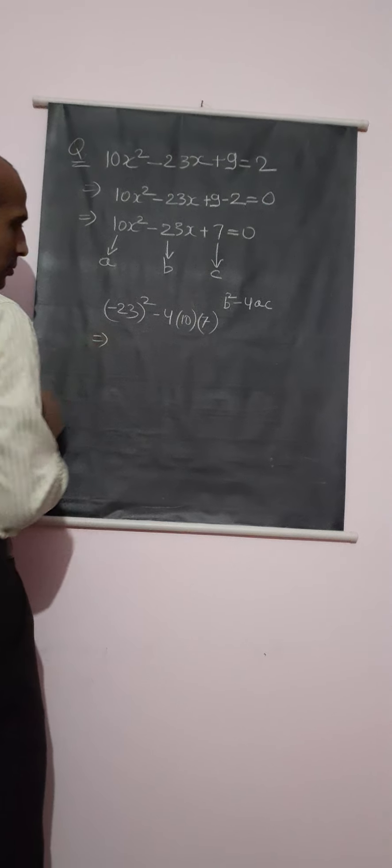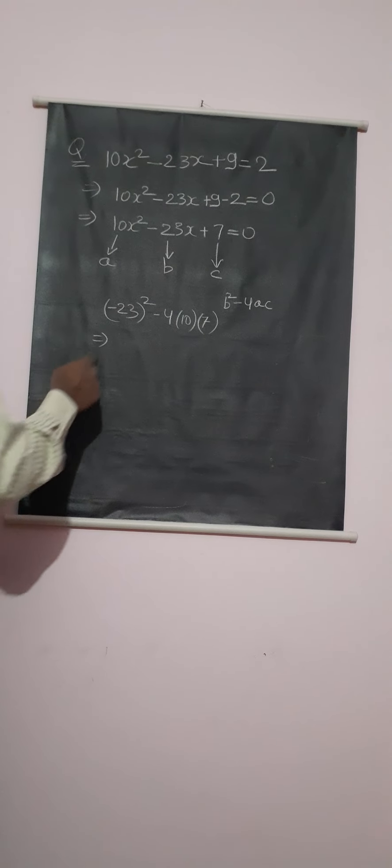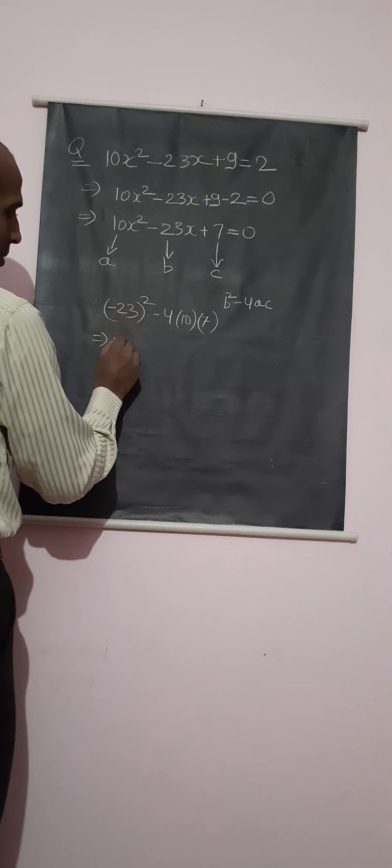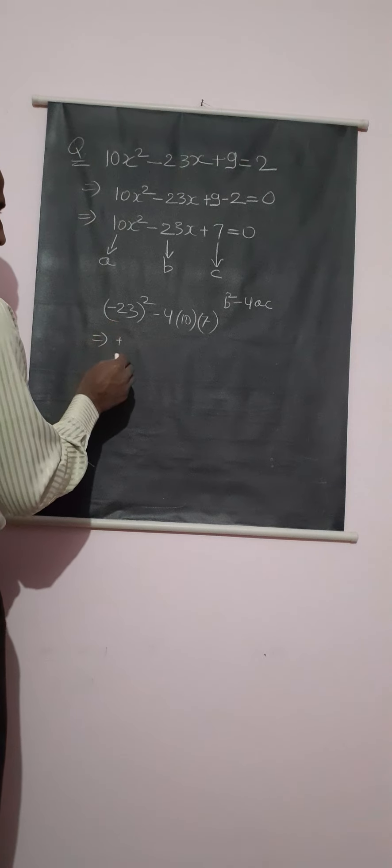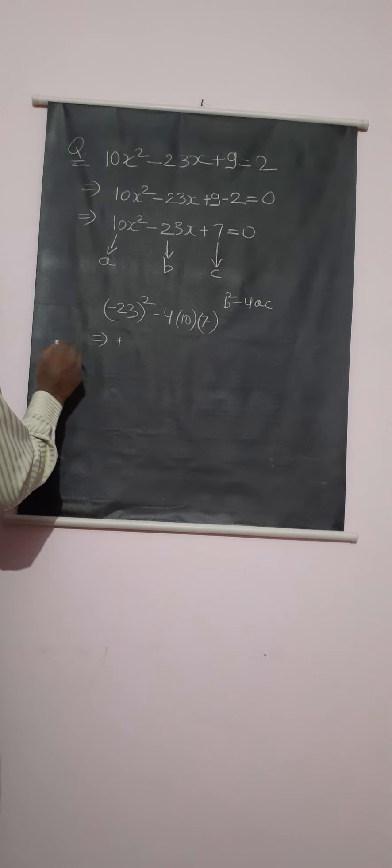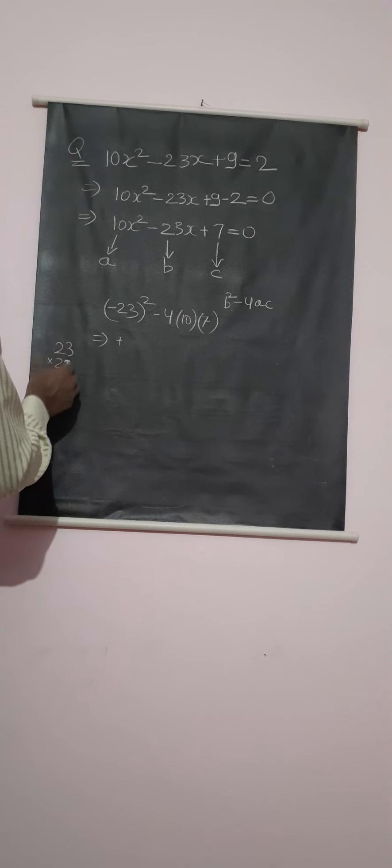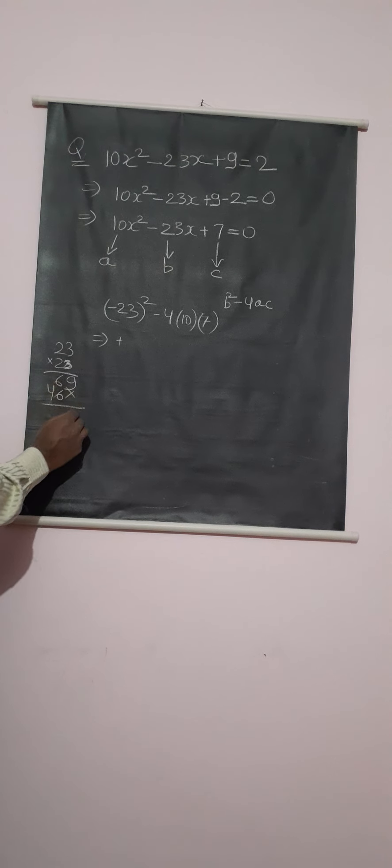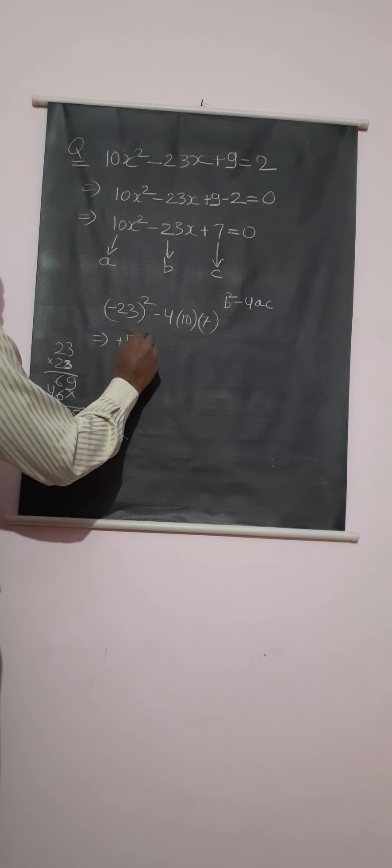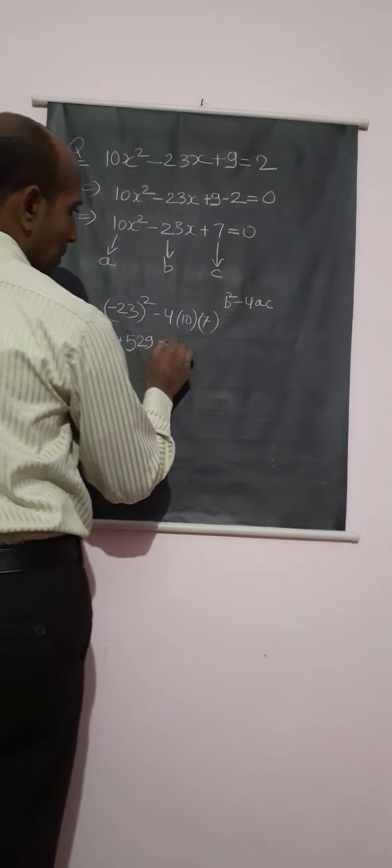So we will get the square of minus is plus, 23². What is the value? 23 times 23... 3 times 6, 2 times 6, and it is 4. This is 9, 6 is 12, and it is 5. 529 minus.